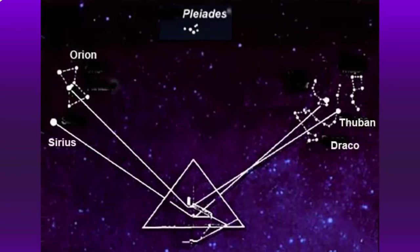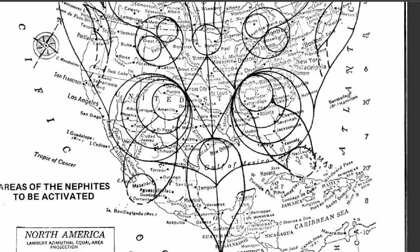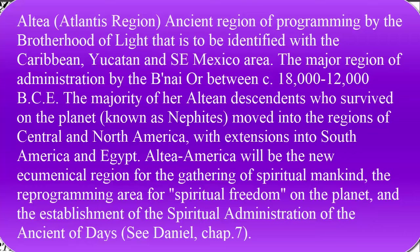It is these lambs — the Christ seed — that are actually going to find the particular areas he's talking about in the dove. In other words, they're going to be led there by the Elohim. The area in the Gulf of Mexico just off the coast of Mexico — that's where we hear about the Altea Americas.